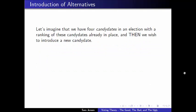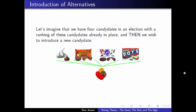Now the next one I want to introduce is a little bit more complicated, so I'd like to introduce it with an example. I'm a big fan of doing voting with candy, so we're going to be talking about having candy dates in our election. What I'd like for us to imagine is that we have four candidates that we were already considering. In this image, our four candidates are Hershey's, Reese's, York, and Dots. And let's imagine that we've already worked hard to come up with a collective ranking of those four candidates, and I've displayed that here.